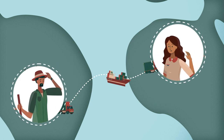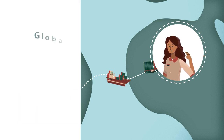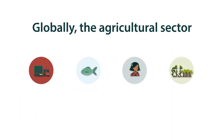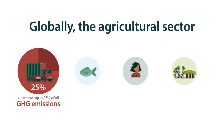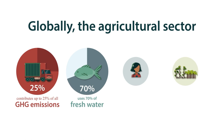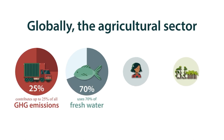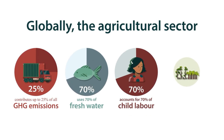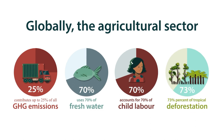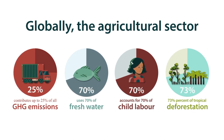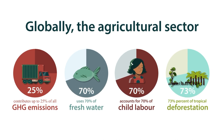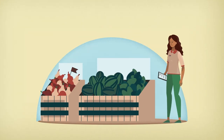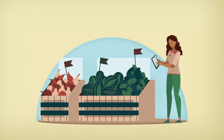However, at times there can be harmful impacts along the way that can take place from the farm to your table. Globally, the agricultural sector contributes up to 25% of all greenhouse gas emissions, uses approximately 70% of freshwater resources, accounts for 70% of child labour, and is a driver of global deforestation, accounting for up to 73% of tropical deforestation.